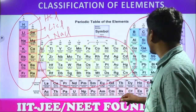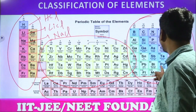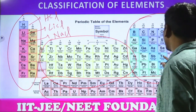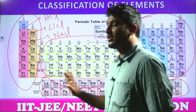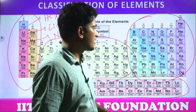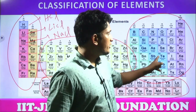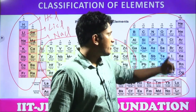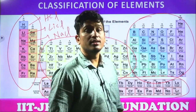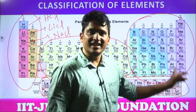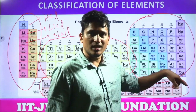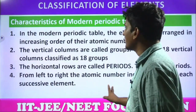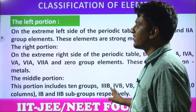And anomalous pairs of elements — for example, tellurium and iodine. Their masses are in decreasing order, but tellurium's atomic number is 52 and iodine's atomic number is 53 — they are in increasing order of atomic numbers. That is how these drawbacks were rectified.